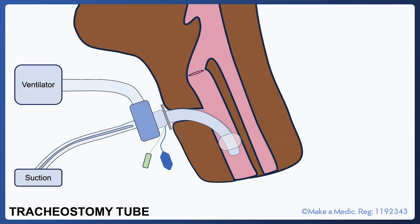When a tracheostomy tube is connected to a ventilator in ITU, it will look something like this. There will be tubing going into the ventilator and there will also be a plastic sleeve containing a suction catheter that can be guided into the airways when required to perform deep suctioning. For the rest of this talk, I'm going to leave this out of the diagrams so that we can focus on the tracheostomy tube itself.